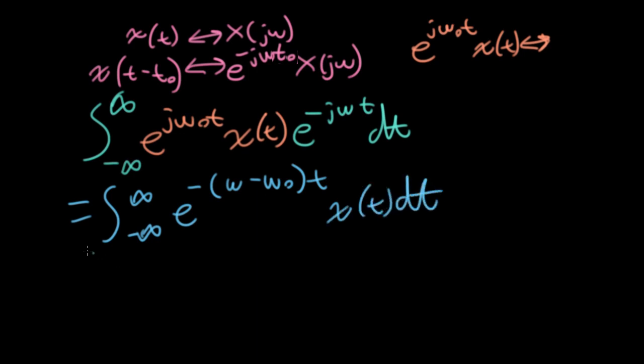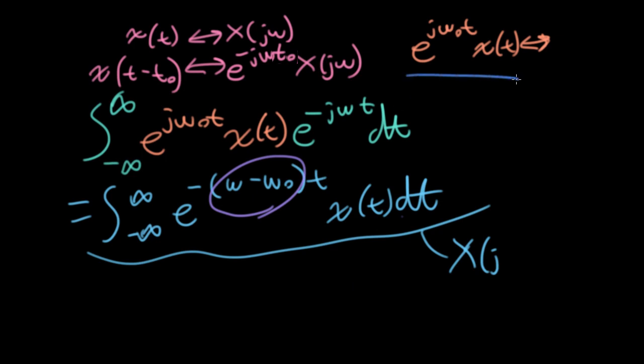Let's write this as e to the minus (omega minus omega0) times t x(t) dt. And now if I look at this, this looks like a Fourier transform, but in a slightly different way that we haven't seen before. This thing looks like a Fourier transform, but we don't have omega here. We have an omega minus omega0. So what we have is that the Fourier transform is the Fourier transform of x(t), which we're calling big X, but it's evaluated at omega minus omega0.